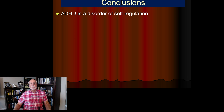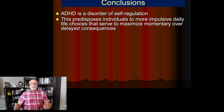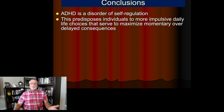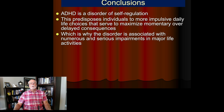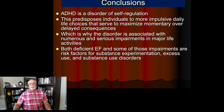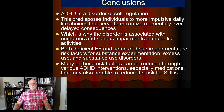In conclusion, we've seen in these videos that ADHD is a disorder of self-regulation, and that those self-regulation problems predispose individuals to more impulsive daily life choices — leading them to maximize momentary consequences over delayed consequences, making them more susceptible to addictions of all types, including substance use problems. This is why ADHD is often associated with impairments in most major life activities and why it's more likely to be associated with substance use problems, such as experimentation, excess use, and even use to the point of qualifying for a diagnosis of a substance use disorder.